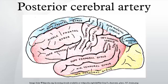The posterior cerebral artery is one of a pair of blood vessels that supply oxygenated blood to the posterior aspect of the brain in human anatomy. It arises near the intersection of the posterior communicating artery and the basilar artery, and connects with the ipsilateral middle cerebral artery and internal carotid artery via the posterior communicating artery.